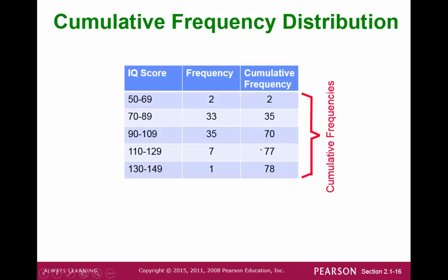A cumulative frequency distribution counts the current frequency along with the previous frequencies. For example, the cumulative frequency table would begin at 2 and then you add 33 to 2 and you get 35. Now you add 35 to your current cumulative frequency and you get 70.